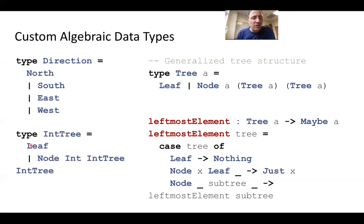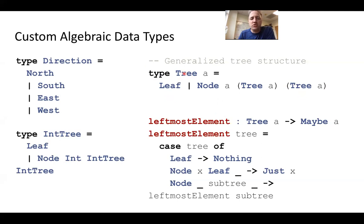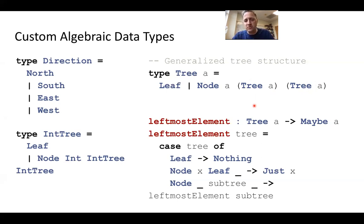You could take this integer tree and say, what if I didn't want integers — what if I wanted floats or strings? We could use type parameters to parameterize the int tree and come up with a generalized tree. Here's a type called tree with a parameter a. We can create trees of ints, strings, or whatever. They consist of either a leaf node or a node containing something of type a, and then a left thing of type tree of a and a right thing also of type tree of a. In this way, we can easily create trees of integers, strings, floats, or whatever.